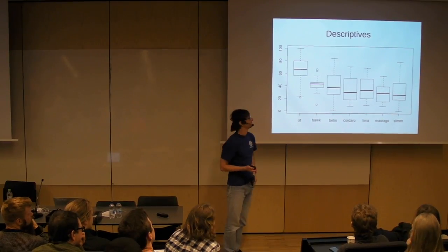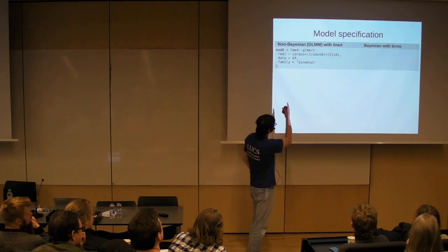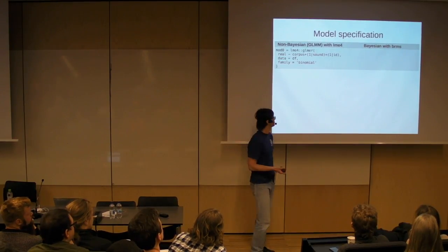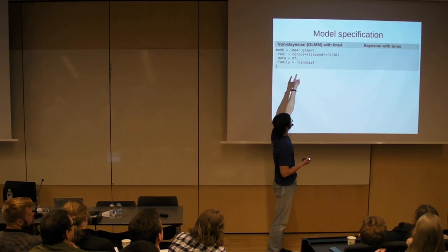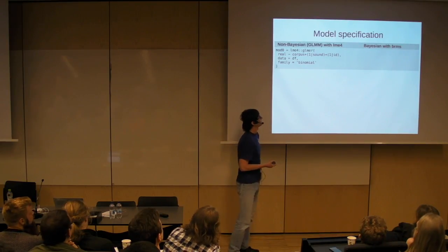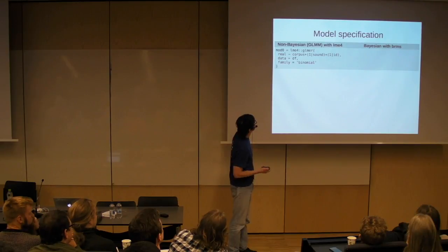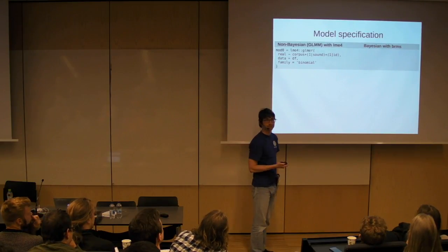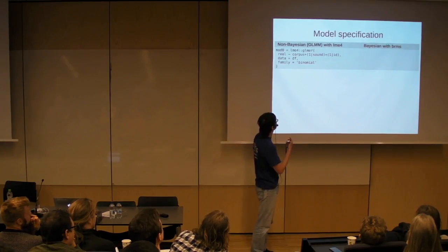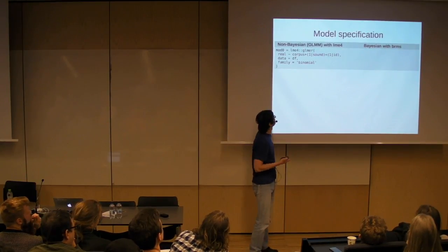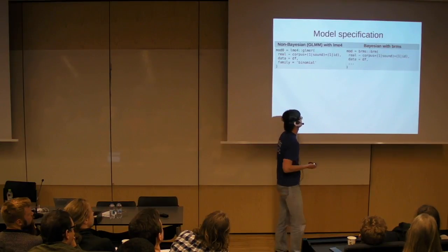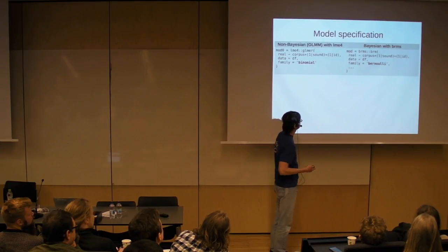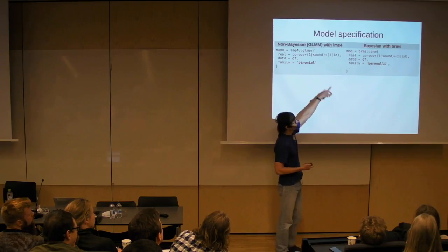Let's look at the model. We have to specify the model. Taking the simplest mixed model: 'real' is the response variable, we're interested in the effect of corpus, and we have two group-level intercepts — for stimulus and for participant. With non-Bayesian models, this would just be calling the lme4 function glmer. To do it the Bayesian way, we start by writing exactly the same formula, passed to brms. Nothing changes except the family, which becomes Bernoulli rather than binomial. And basically we could stop here — this would already work.